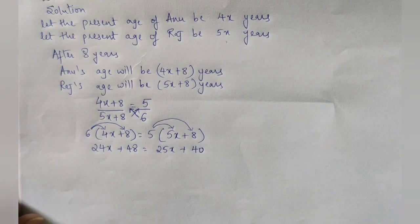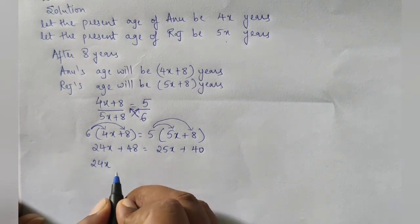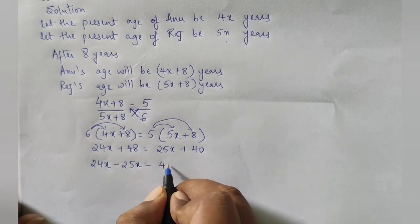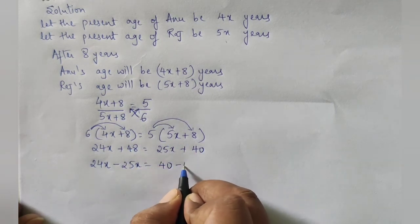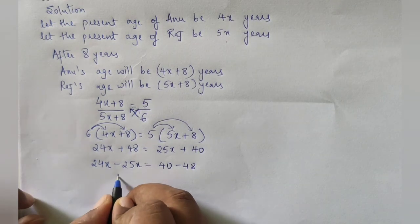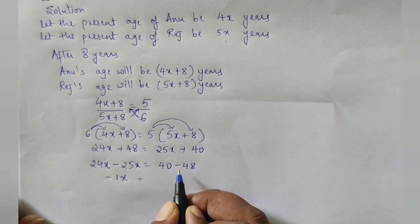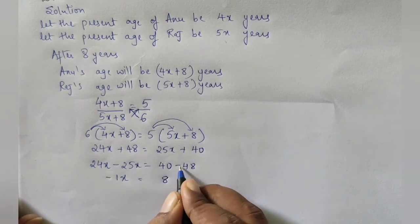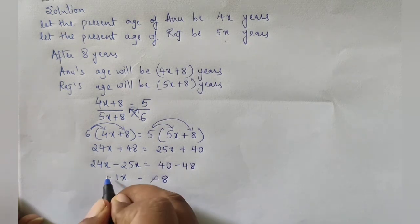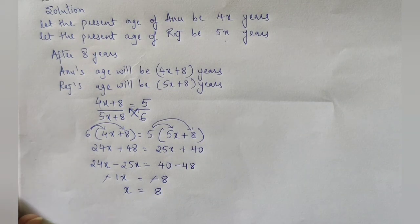Bringing like terms together: transpose 25x to the left — it becomes 24x − 25x — and transpose 48 to the right — it becomes 40 − 48. So −1x = −8, and the minus signs cancel, giving x = 8.